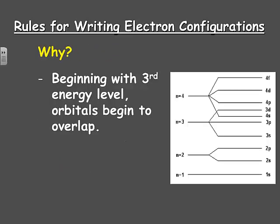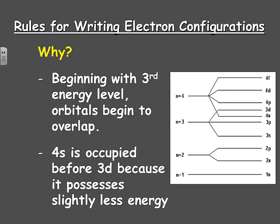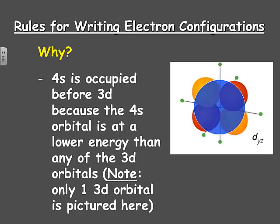If you look at the diagram on the right, you can see that beginning with the third energy level, your orbitals within those levels begin to overlap. The 4S is occupied before the 3D because, as you can see in the diagram, it has slightly lower energy than the 3D sublevel. Here is a diagram of the spherical orbital at the 4S level and just one of the D orbitals at the 3D sublevel. The 4S sublevel does not go out nearly as far as the 3D outer edges, because the 3D has a bit more energy. That's why the 4S is occupied before the 3D.